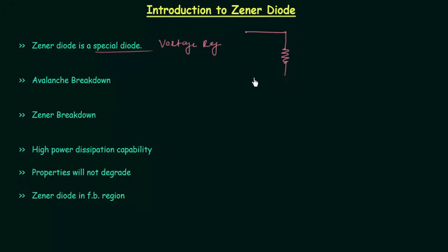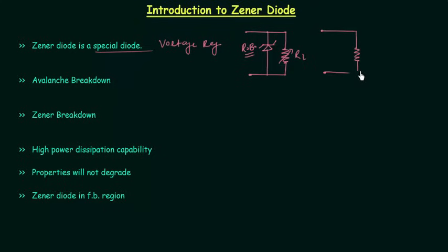Let's say RL is the varying load. I will connect the Zener diode in the circuit. This is the symbol of Zener diode, and if this Zener diode is reverse biased, we can replace it by a constant voltage source. The voltage is equal to VZ, and this voltage is given in the specification sheet of the Zener diode. We have different voltages for different Zener diodes. This is the varying load RL and we can have varying current with constant voltage, so the Zener diode is used for voltage regulation.